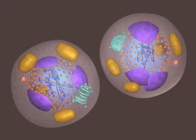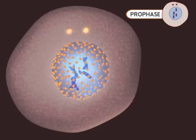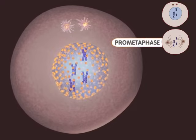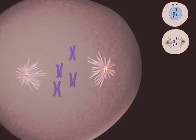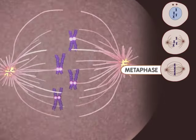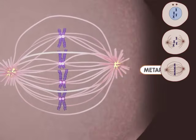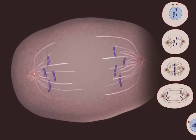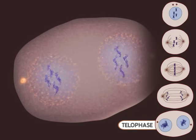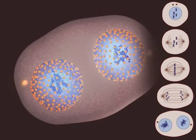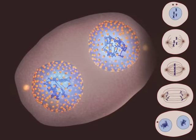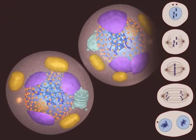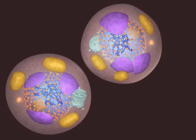Let's watch the process one more time. Mitosis begins with prophase — notice the DNA condensing into chromosomes during this stage. Microtubules appear during prometaphase, and the nuclear membrane breaks down. Metaphase occurs when the chromosomes are aligned at the center of the cell. During anaphase, the chromosomes are moving apart. The telophase stage is marked by the appearance of new nuclear membranes. This is the end of mitosis. Finally, the splitting of the cell occurs during cytokinesis. The two new cells are now ready to grow and perform their specialized functions.